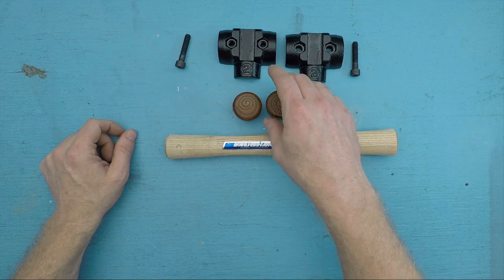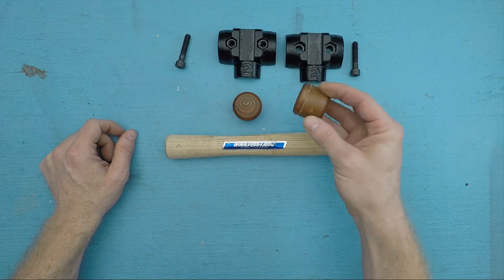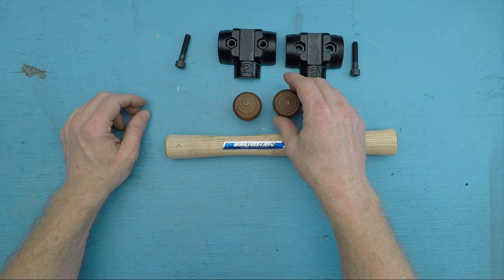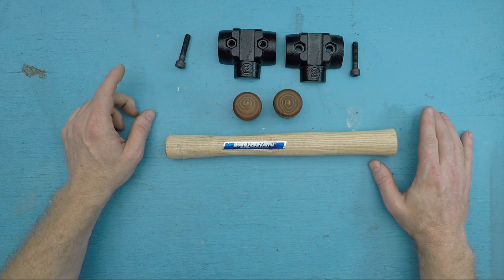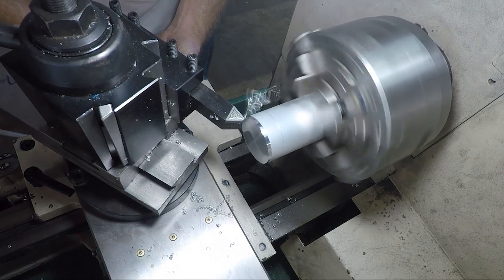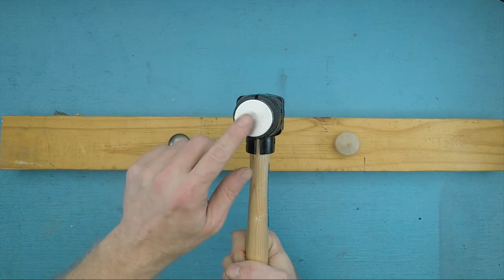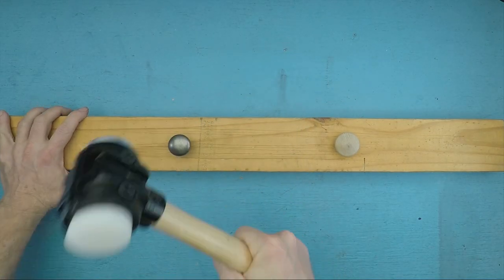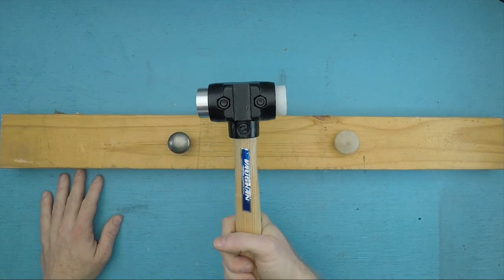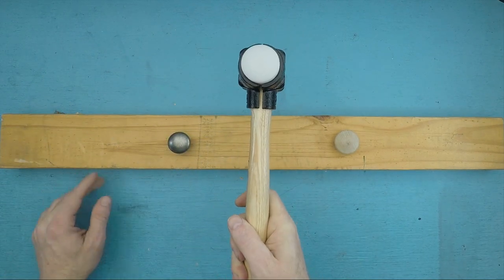And because these inserts are just little cylinders of material, it's quite easy to make your own, especially if you have access to a lathe. Here's an aluminum face I made in about 10 minutes. And the one on this side is polypropylene.